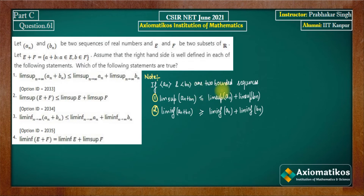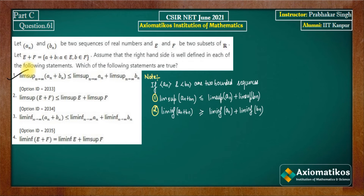Even if the sequence is unbounded — that is, if LIMSUP is coming out to be infinite — both these properties still hold. But the question said it is well defined, meaning no value is becoming infinite. So you can directly mark the first option as correct.